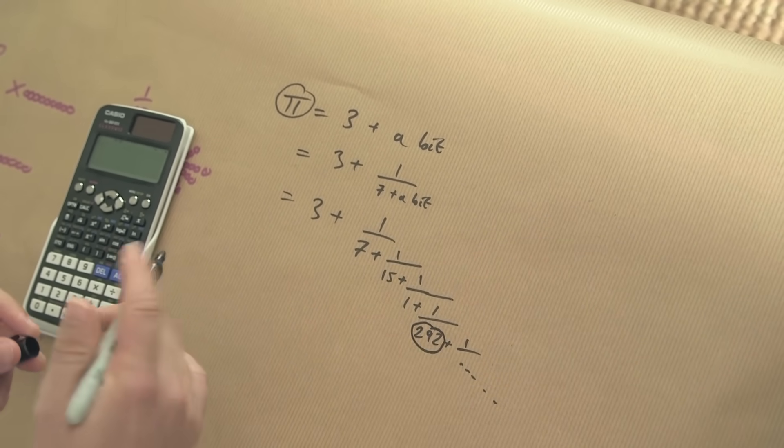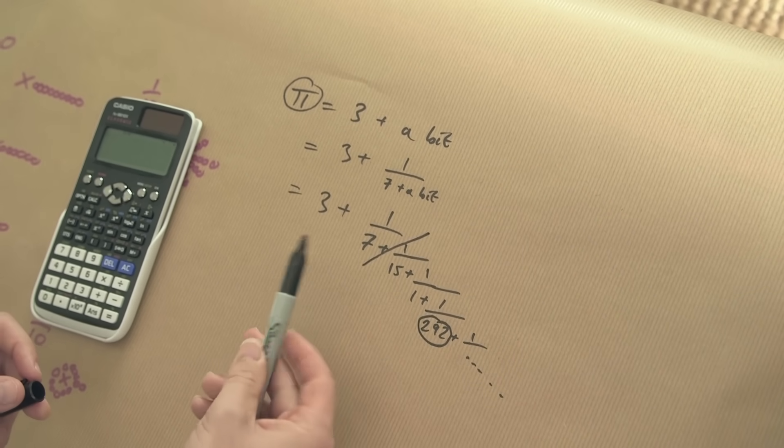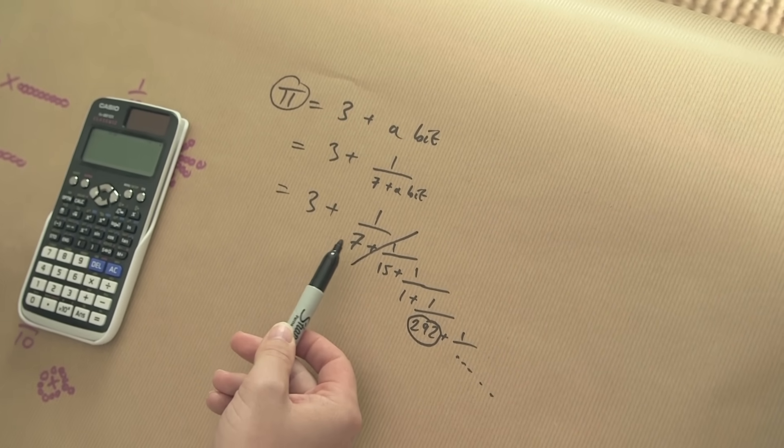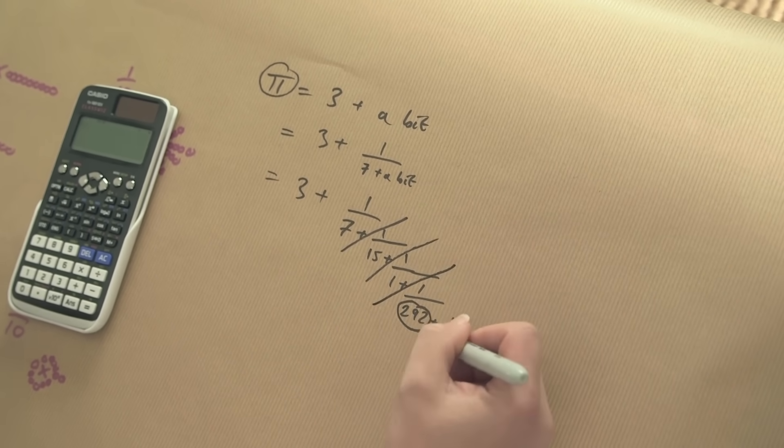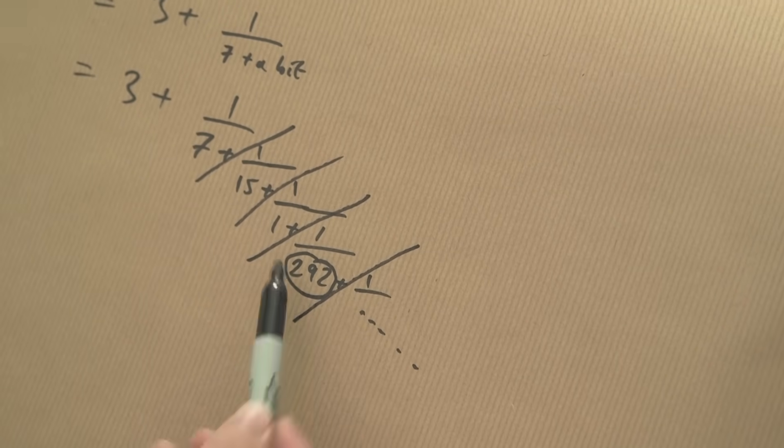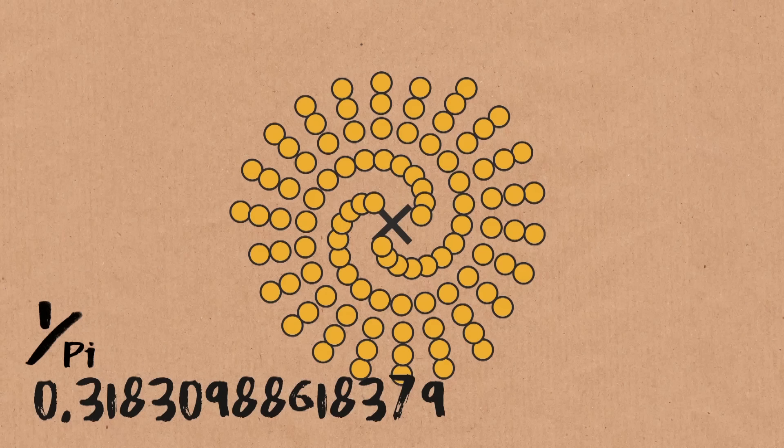If you truncate the continued fraction at various points, you get approximations for pi. Chopping at 7 gives 22 over 7. Because 292 is massive and it's 1 over that number, the additional bit is tiny — almost trivial. This means the approximation just before that level was ridiculously good, which is why pi is well approximated quite early on by a rational number. That's why I claim it's not very irrational — and why the diagram of 1/pi looked like it had spokes.